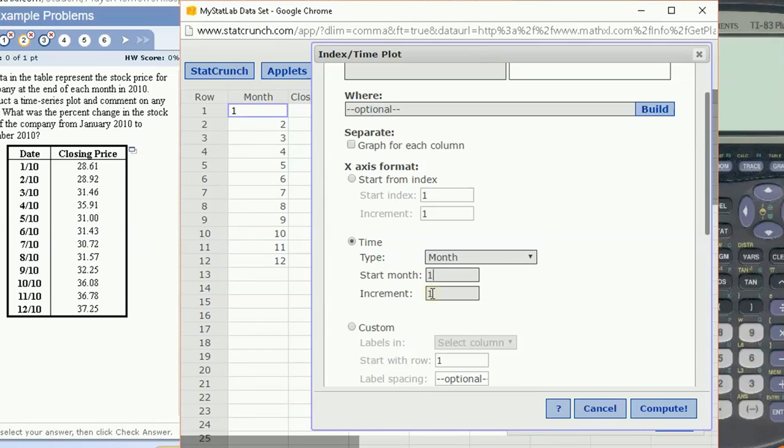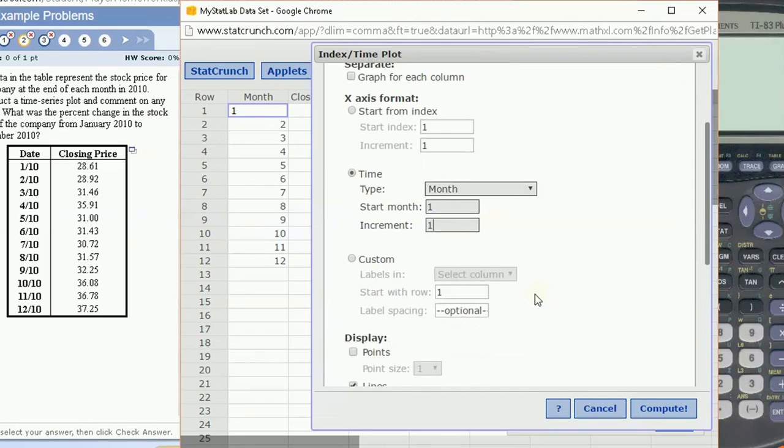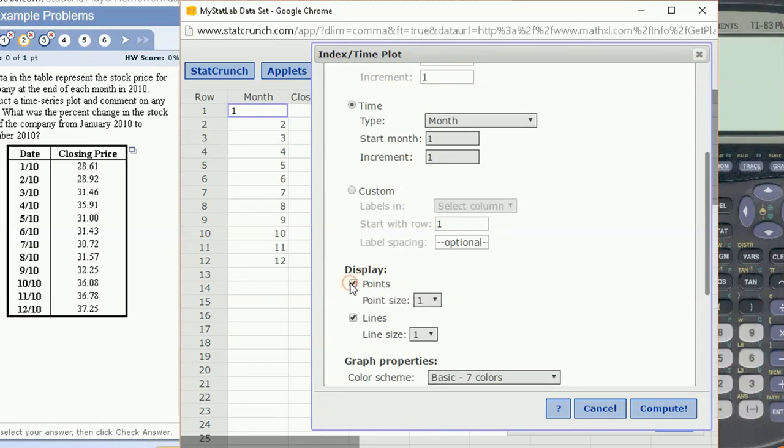Starting month is 1, which corresponds to January. The increment, that's one month per bar, or each data is in the next month. That's what I want. I'm going to display points and lines.